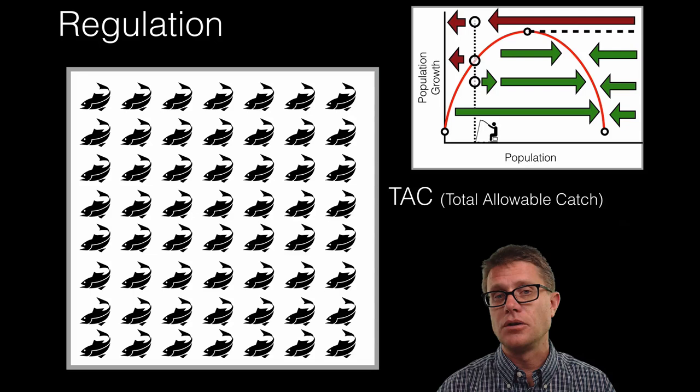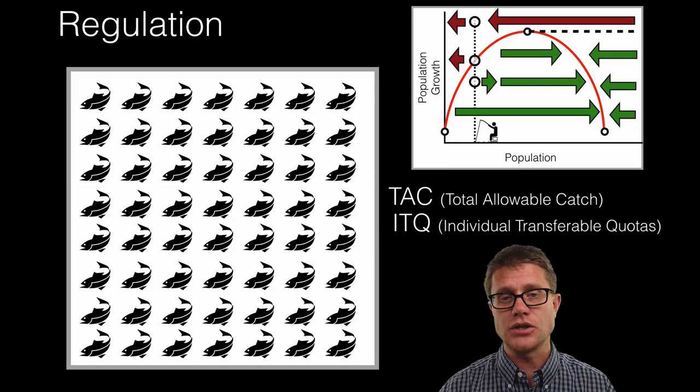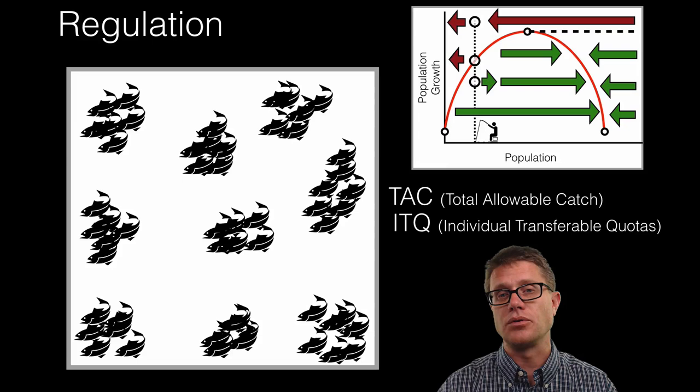And then what you can do is you can use quotas. We can use individual transferable quotas. So each little fisherman or each little fishery gets a set amount of fish that they can catch. It is almost like staking a claim in mining. You can then start to invest in that fishing.